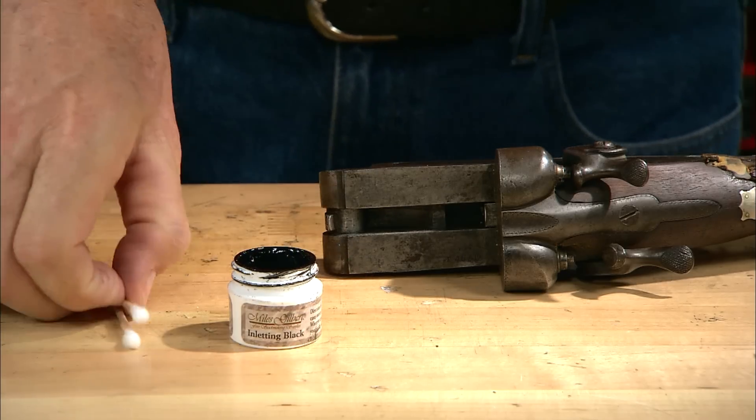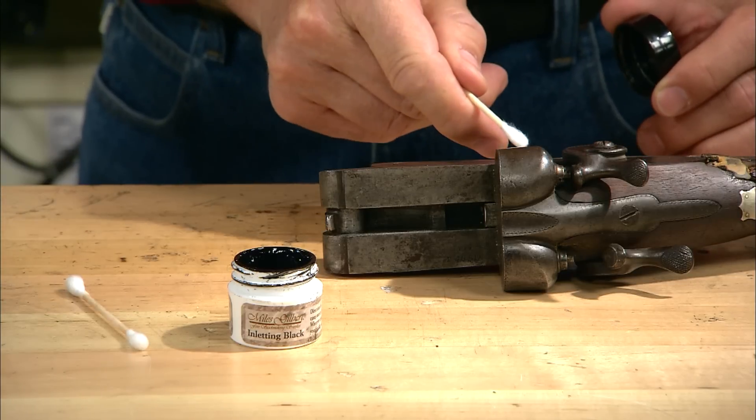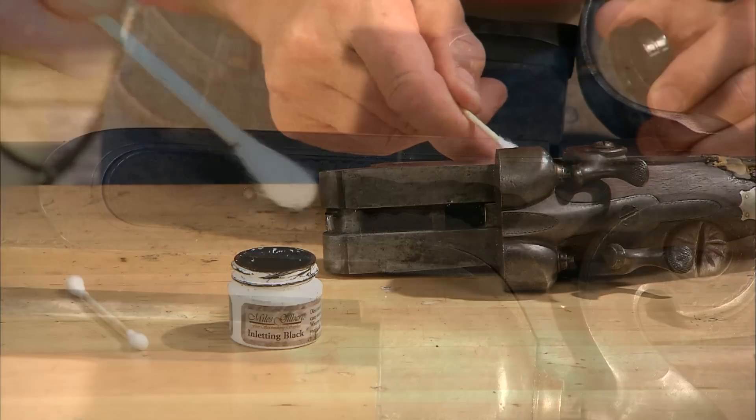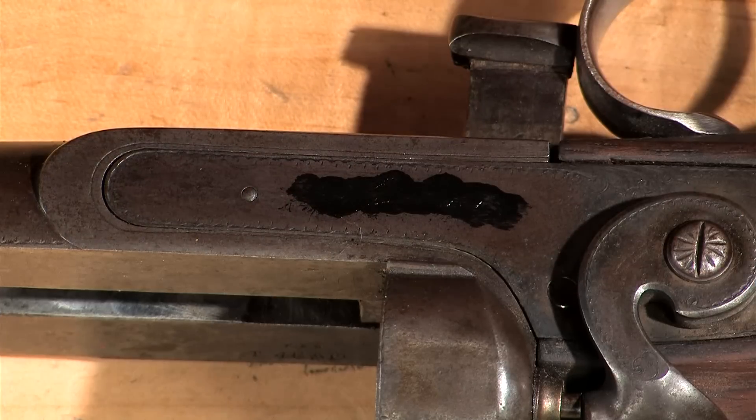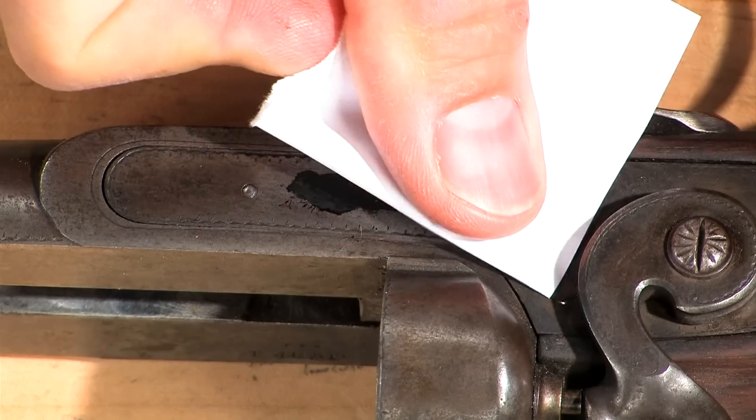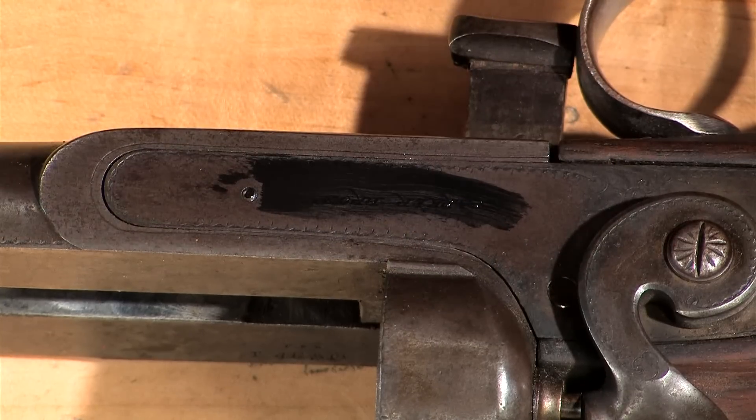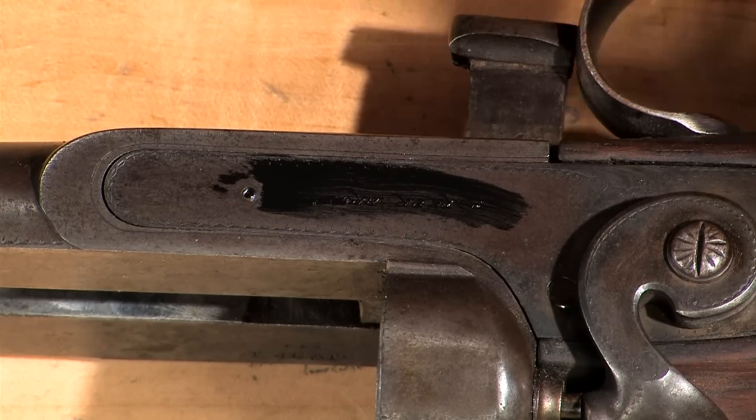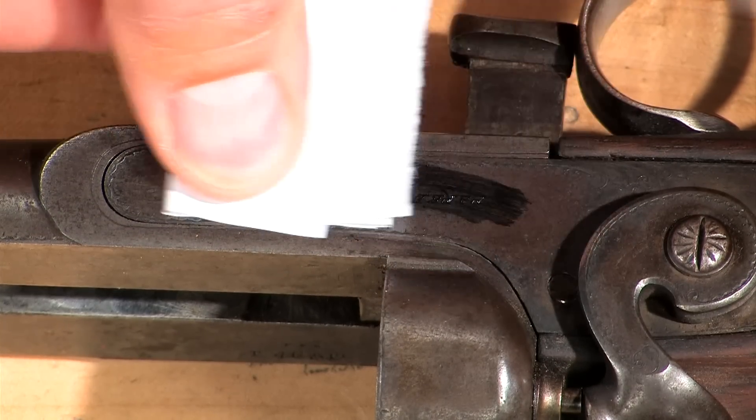The first step is to take a lifting of the engraving from a shotgun of a similar vintage. I dab a little inletting black into the lettering and wipe off the excess with a paper towel. This will leave the inletting black in the letters without any on the surface of the lock plate.